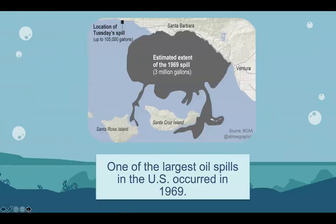One of the largest oil spills in US waters occurred in January and February 1969 off the coast of Southern California, near the city of Santa Barbara. The environmental effects of this spill were immediate and dramatic. It was the largest oil spill in United States waters at that time, and now ranks third after the 2010 Deepwater Horizon and 1989 Exxon Valdez spills. It remains the largest oil spill to have occurred in the waters of California.